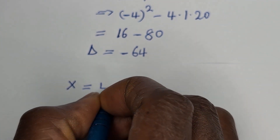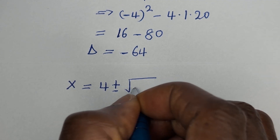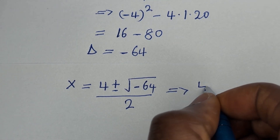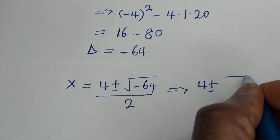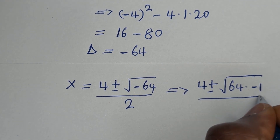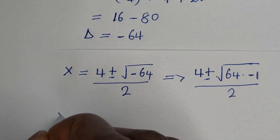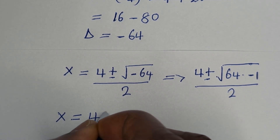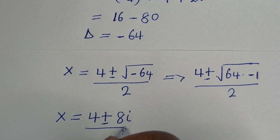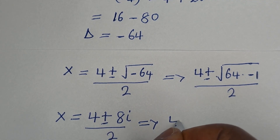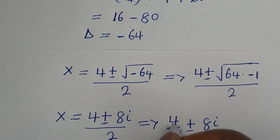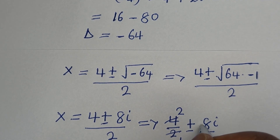x is equal to 4 plus or minus square root of minus 64 over 2. This is the same as 4 plus or minus square root of 64 multiplied by minus 1, over 2. So x is equal to 4 plus or minus square root of 64, that is 8, and square root of minus 1 is i, over 2. This is the same as 4 over 2 plus or minus 8i over 2.